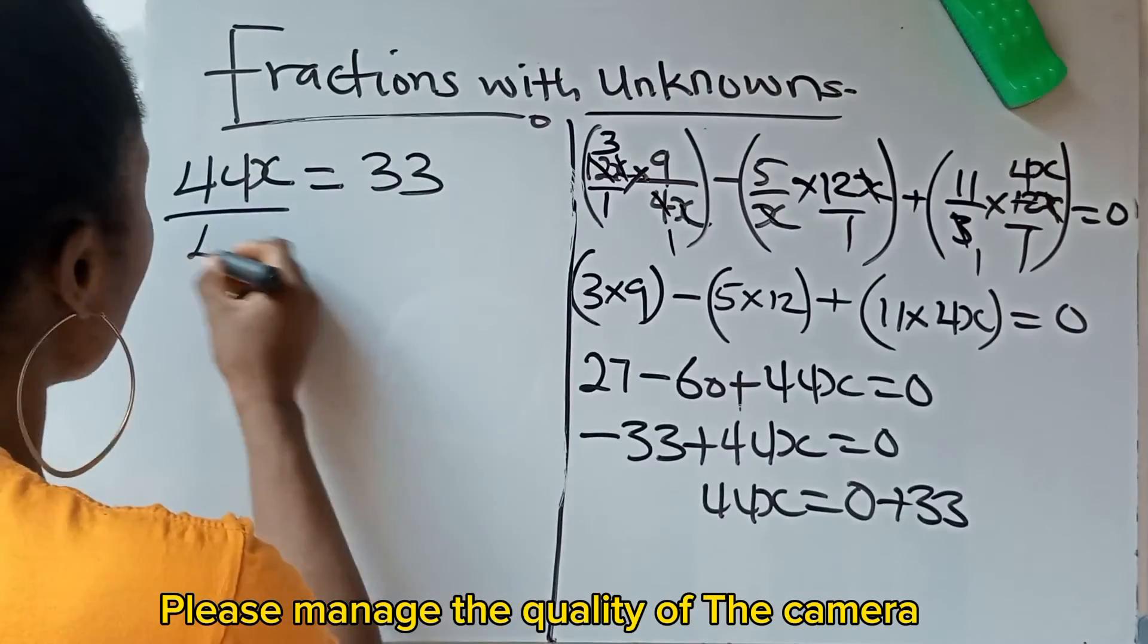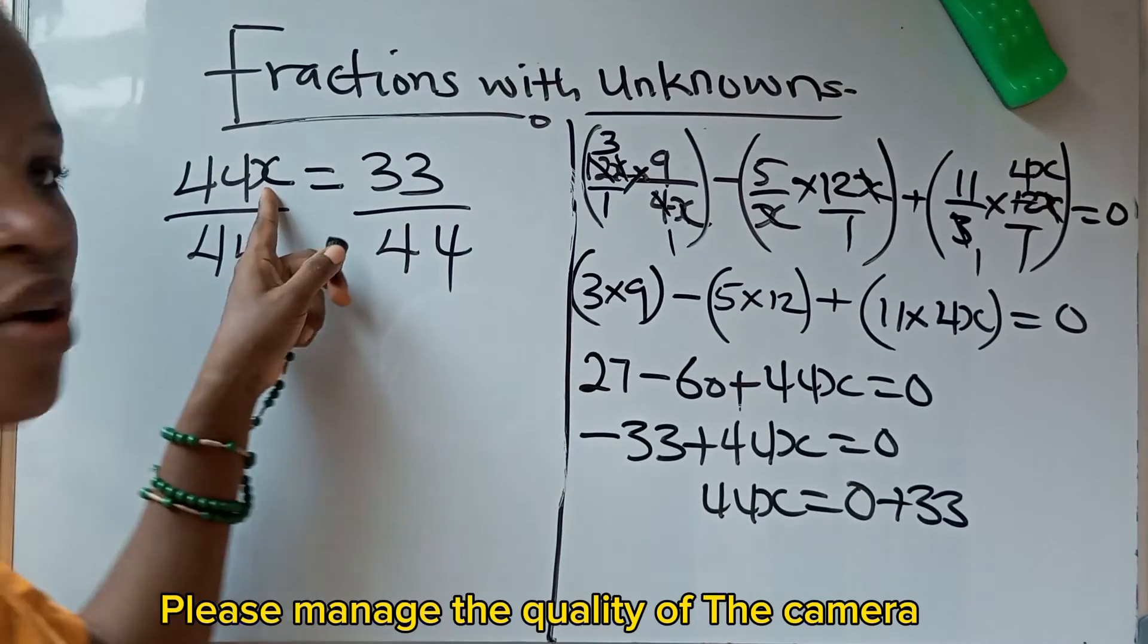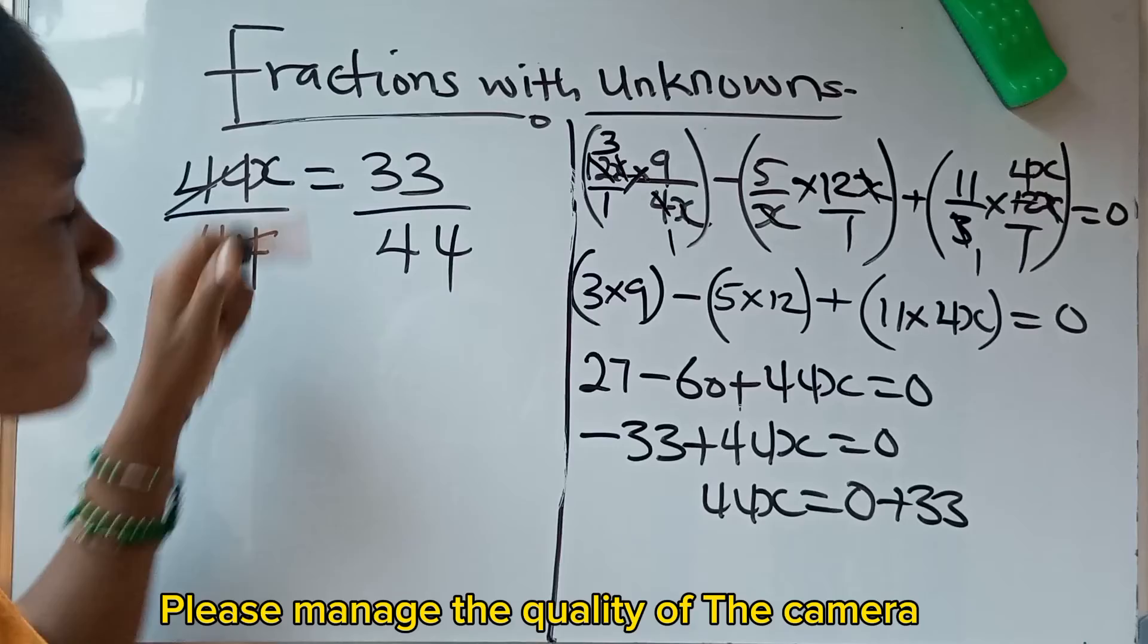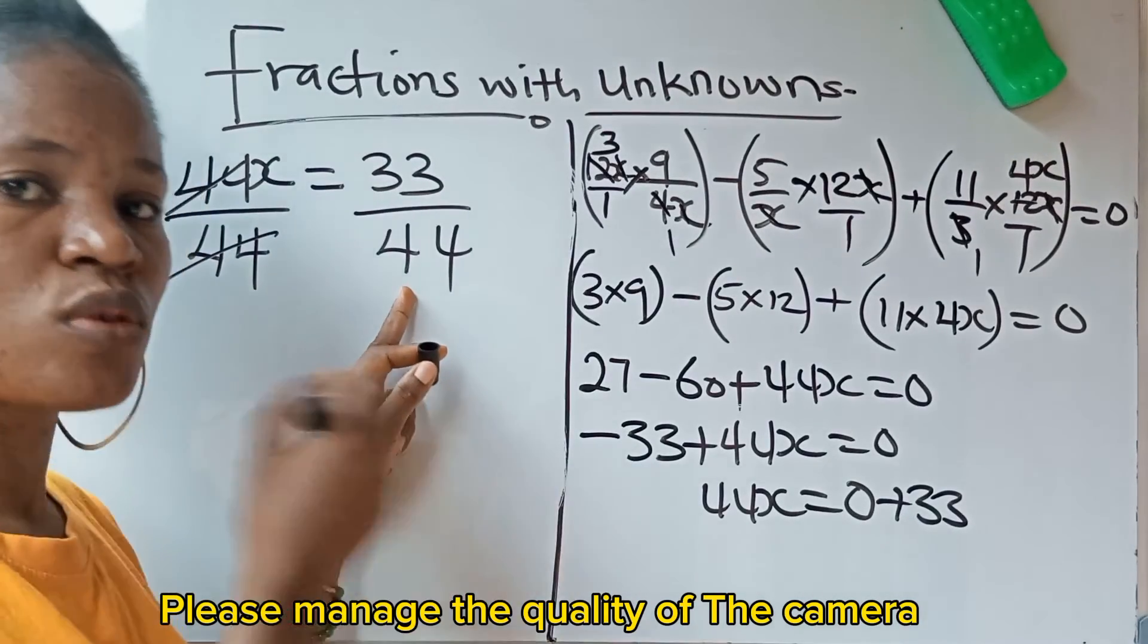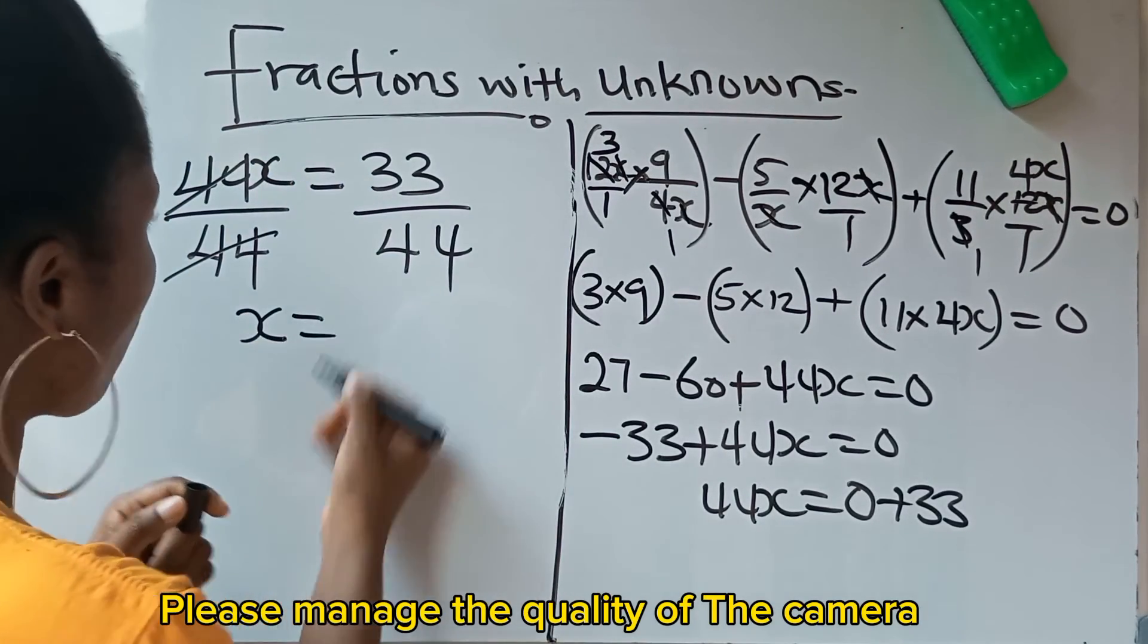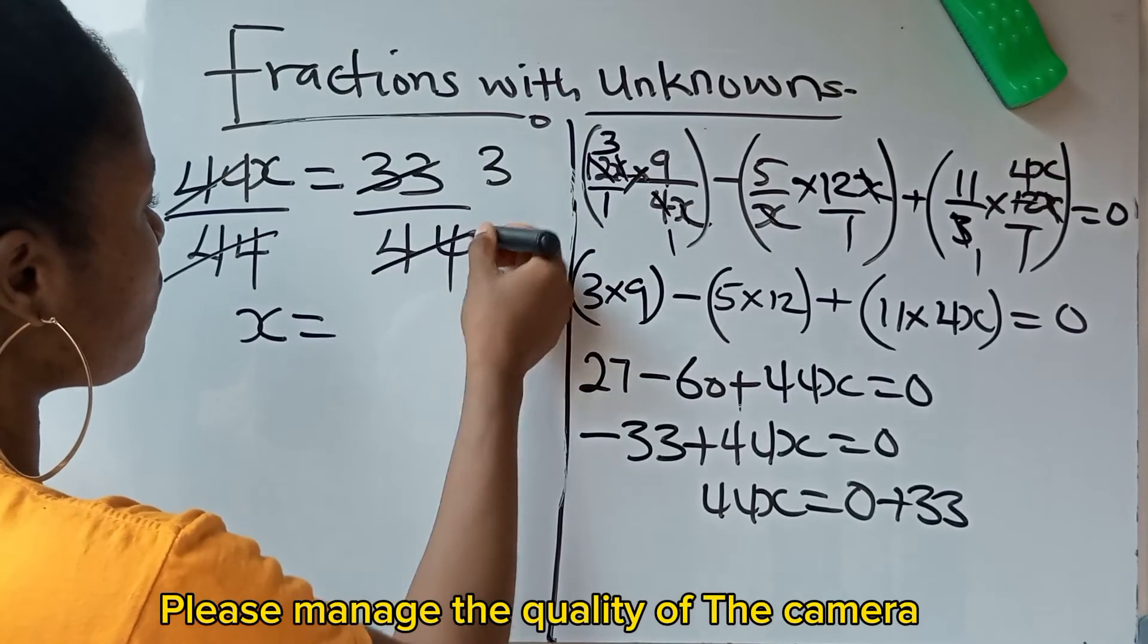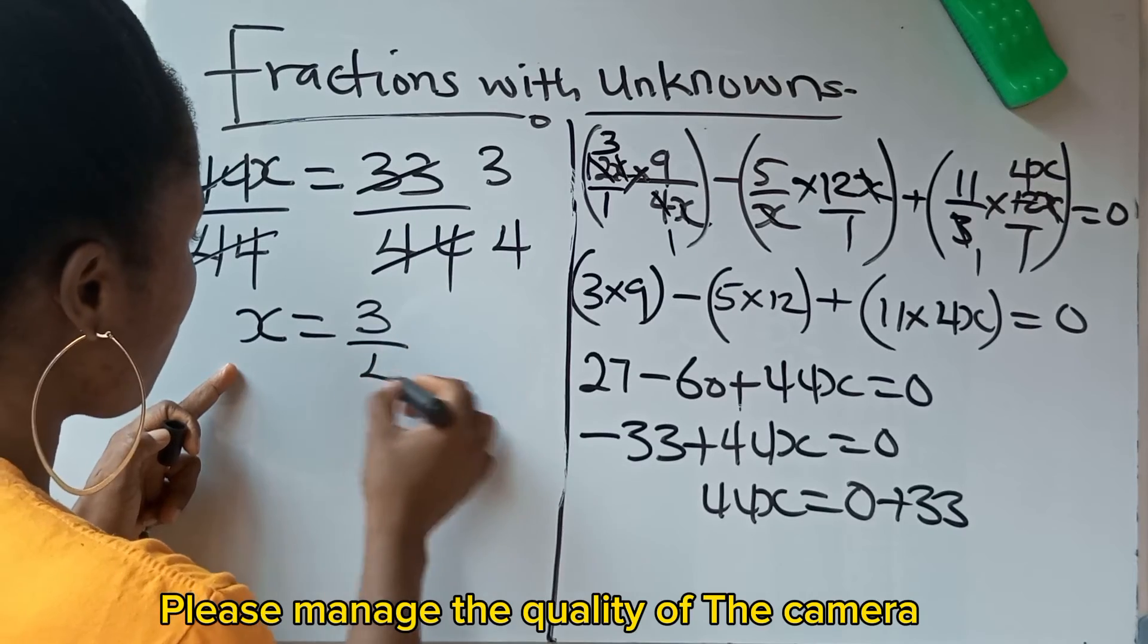So we divide both sides by 44. Why? Because we need the value of x. And for us to get x to be on its own, it's only 44 that can cancel 44 for us to have x. So whatever we do to this side, we do it to the other side. This place now, we are left with only x. Our x is equal to what can divide both numerator and denominator without remainder? 11. 11 divides 33 gives you 3. 11 divides 44 gives you 4. So x is equal to 3 over 4. And this becomes your answer.